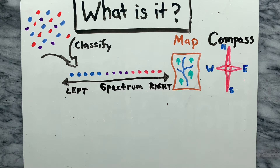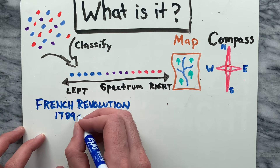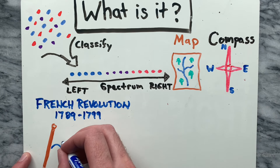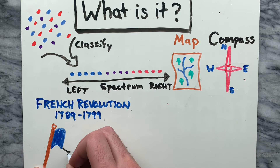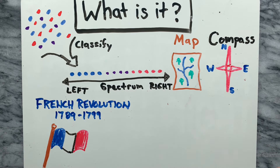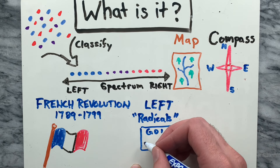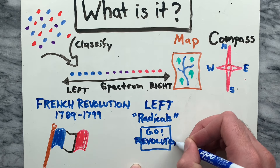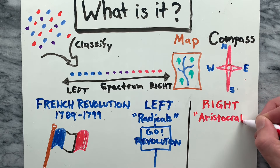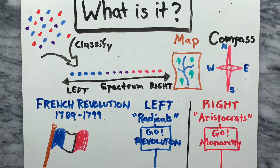It originated from the seating arrangements in the French Parliament after the French Revolution from 1789 to 1799. Those on the left, called radicals, supported the revolution, while those on the right, called aristocrats, supported the monarchy. Later, we'll look at how that translates into the terms left-wing and right-wing that you commonly hear used today.